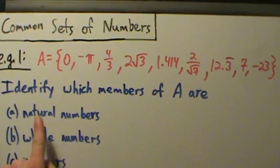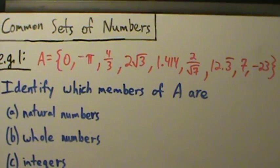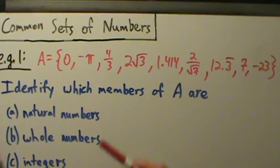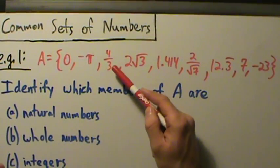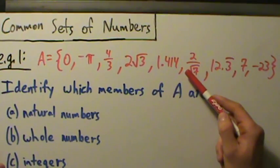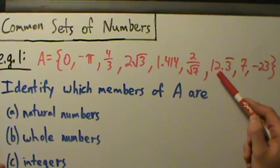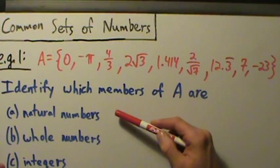So remember, what's a natural number? A natural number is something like 1, 2, 3, 4, 5, 6, 7, 8, 9, 10, 11, 12, and so on and so forth. So zero does not count. No decimals, no fractions, nothing. None of that's allowed for natural numbers.